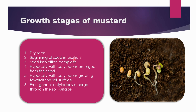Let us discuss about the growth stages of the mustard. Before going to the growth stages, we will discuss about the production of mustard. Mustard is an important commercial crop which is grown in Rajasthan, Haryana, and Uttar Pradesh, and the largest producing state is Rajasthan. Coming to the yield, the average yield of mustard in India is about 7.5 quintals per hectare.